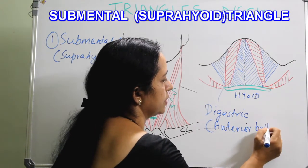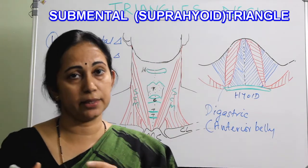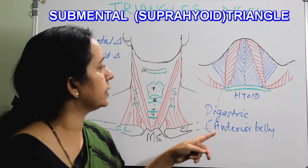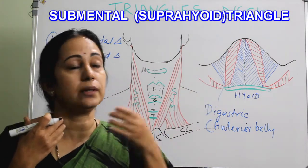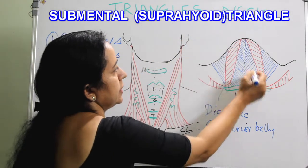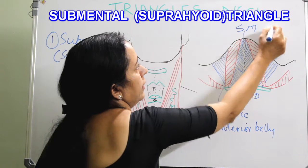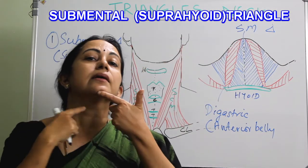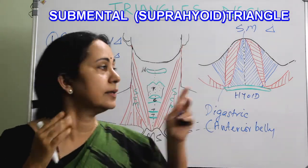The posterior belly of digastric forms the posterior boundary of the submandibular triangle, which will be explained later. The anterior bellies of the digastric on both sides are the lateral boundaries, and the area in between is the submental triangle. The apex is the chin, and below is the hyoid bone.